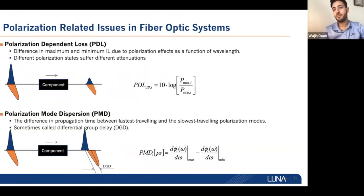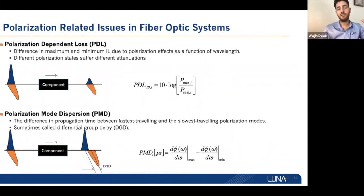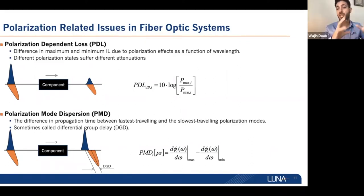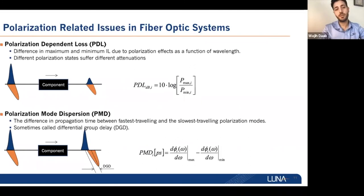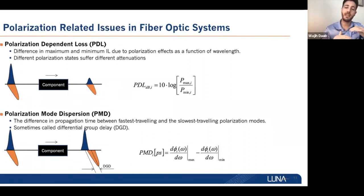The key polarization-related parameters to understand and measure are: first, polarization-dependent loss (PDL), which is the difference between the maximum and minimum insertion loss resulting from changes in the input polarization state — so different polarization states suffer different losses, and their ratio is the PDL. Second, polarization mode dispersion (PMD), which is when different polarization states travel at different speeds, and the differential group delay between them is the PMD.